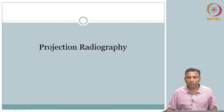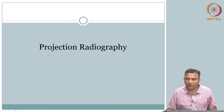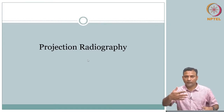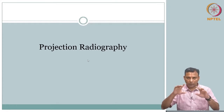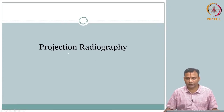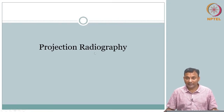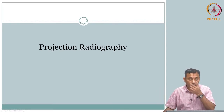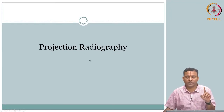By now you should be able to understand technically what is meant by projection radiography. Projection is collapsing a dimension — in our case, we are talking about a 3D volume that is collapsed and projected onto a 2D plane. That is what we call projection radiography. The term 'radio' refers to ionizing radiation, so in projection radiography we are talking about x-ray projection radiography.